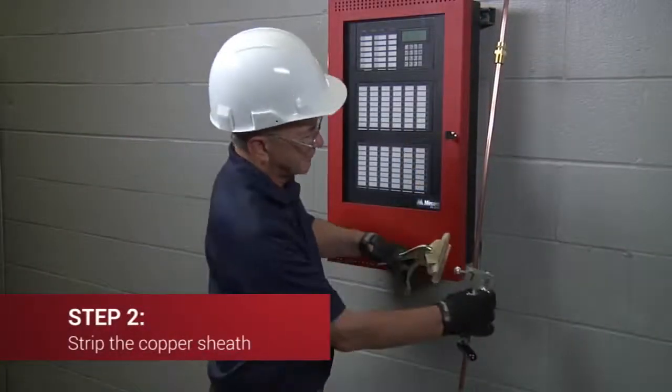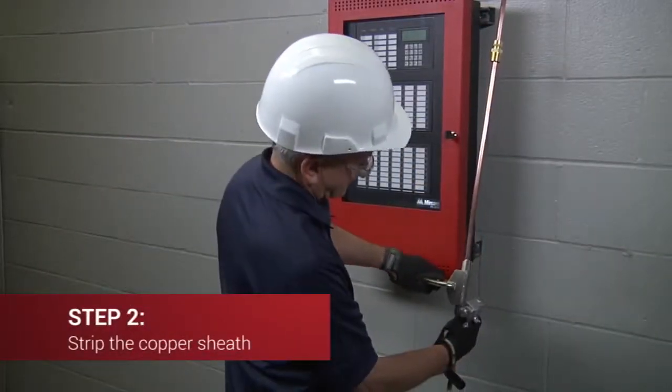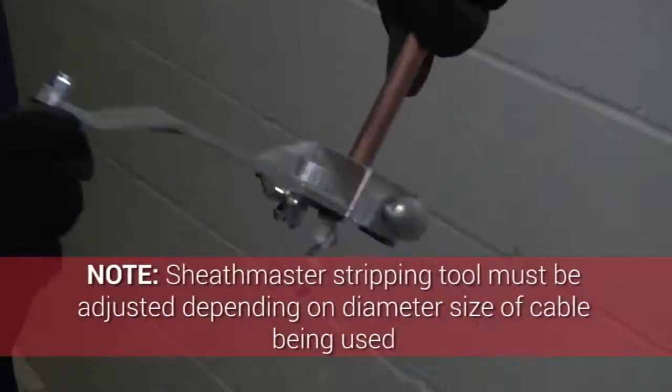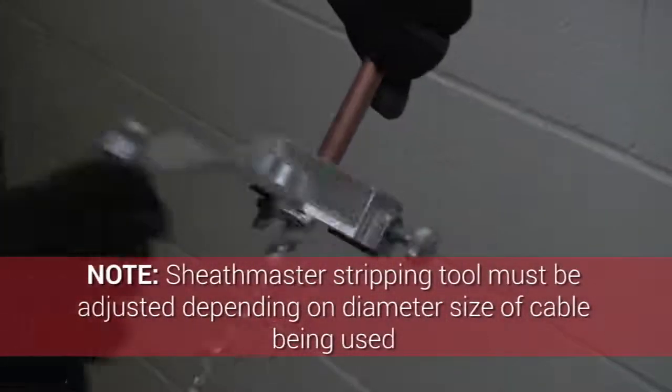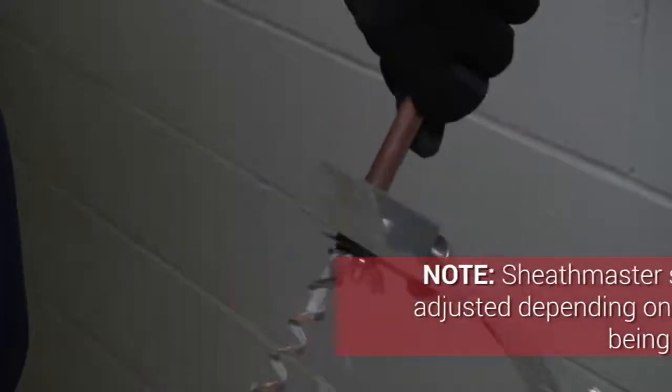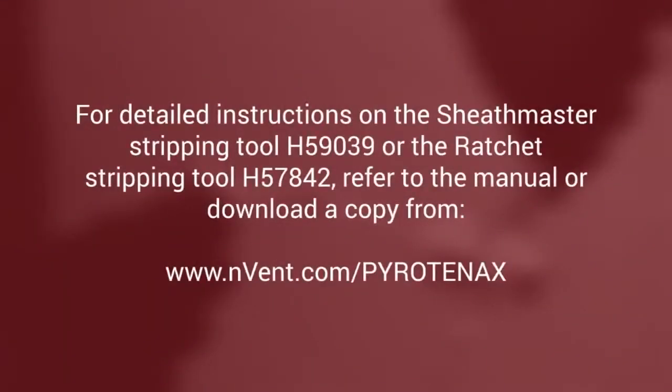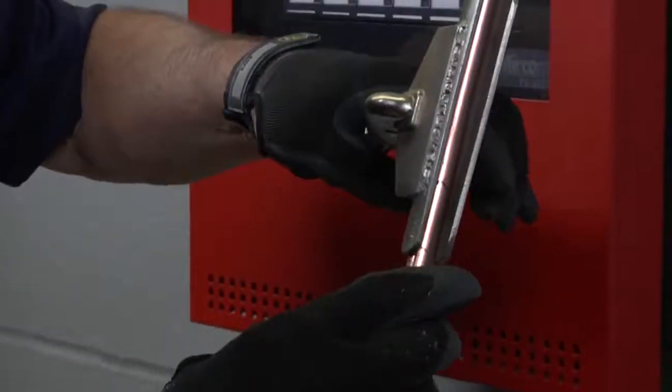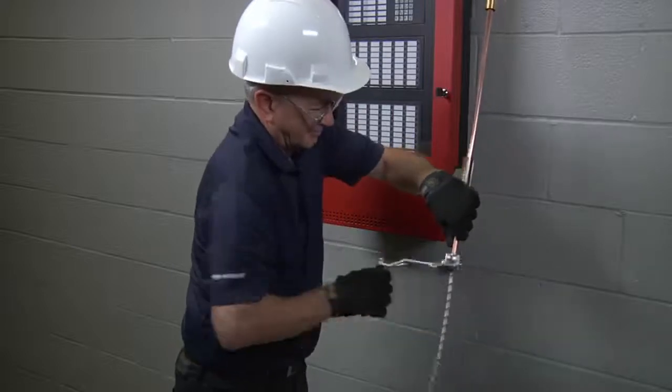Next, strip the copper sheath off the MI cable. Gripping the cable with the hand vise and using the stripping tool, begin stripping the copper sheath back towards the first mark. Note that the sheath master stripping tool must be adjusted depending on the diameter size of the cable being used. For detailed instructions on how to operate the sheath master stripping tool or the ratchet stripping tool, please refer to the instruction manual that came with the tool or download a copy from nvent.com/pyrotanax. Continue to strip the copper sheath, adjusting the grip on the hand vise as you move up the cable to keep it from twisting.